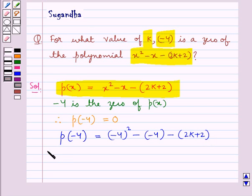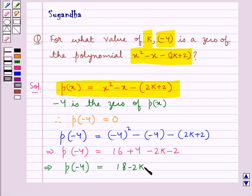That is, p(-4) = 16 + 4 - 2k - 2. Further simplifying, p(-4) = 18 - 2k.